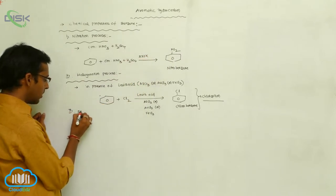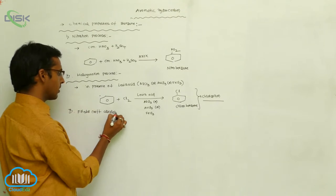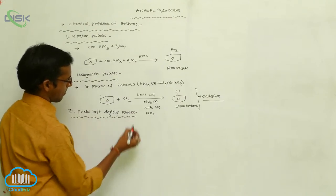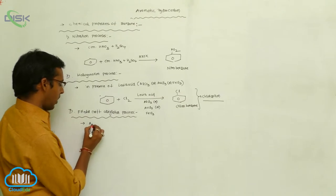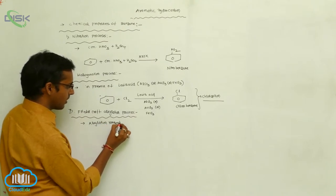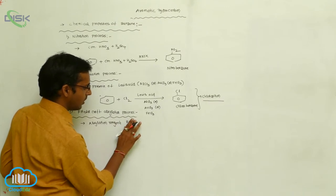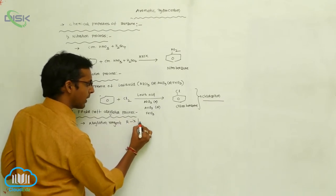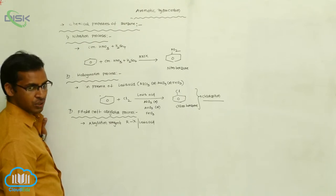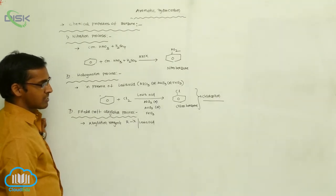The third process is Friedel-Crafts alkylation. The alkylation reagent is an alkyl halide (RX) in the presence of a Lewis acid. Benzene is reacted with the alkylation reagent in the presence of a Lewis acid to produce different alkylated products.